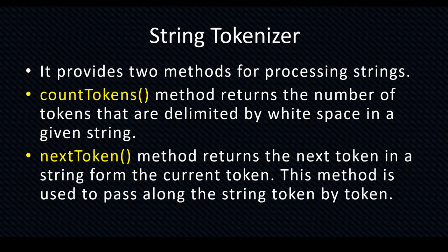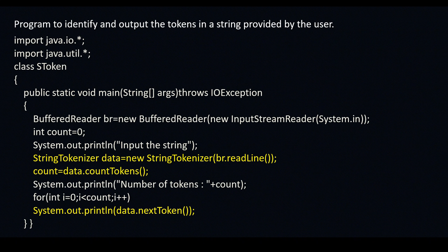The nextToken method returns the next token in string form from the current position. This method is used to parse along the string token by token. So what happens is: you get the input from the keyboard, it is stored as a string, and then you take that string and read it token by token and store it into an array variable or a normal string variable. So here you are going to see a program to identify and output the tokens in a string provided by the user.